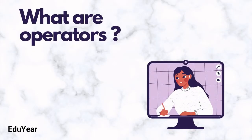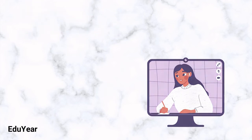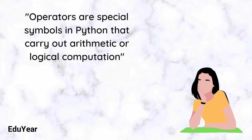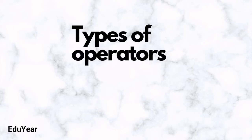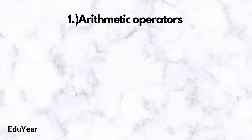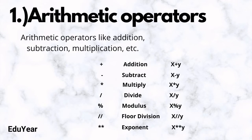What are operators? Operators are special symbols in Python that carry out arithmetic or logical computations. For example, 1 plus 3 equals 4. Here, plus is the addition operator. Types of operators: arithmetic operators like addition, subtraction, multiplication, etc. Here is the list of all—pause and note them down.